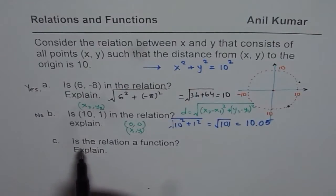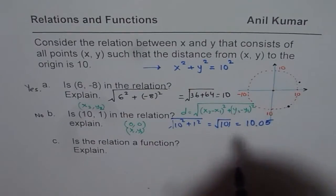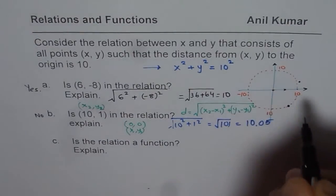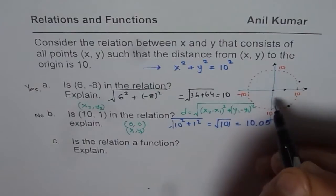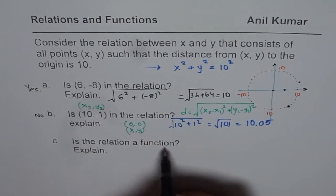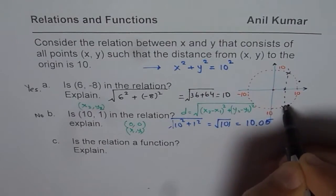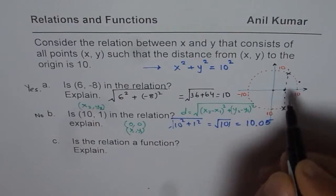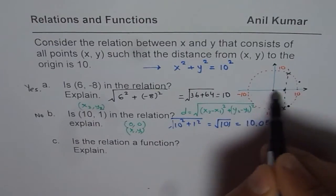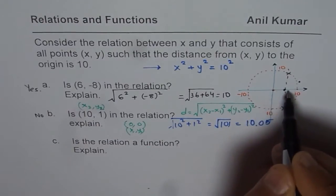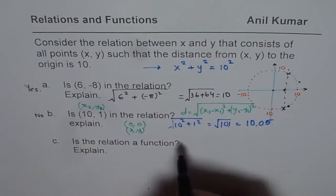Now, part C is, is the relation a function? Explain. For every value of x, we should have unique value of y. Only then, a relation is a function. In this case, if we consider a point and check the values, we will find two values for a value of x within plus and minus 10. And therefore, it is not a function. So, we say it is not a function.